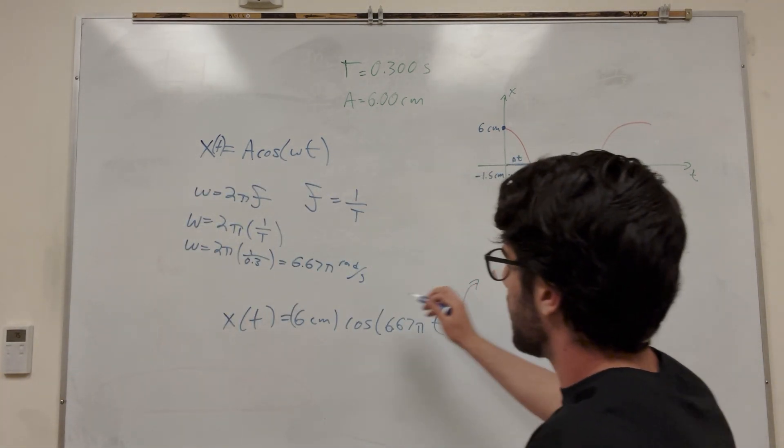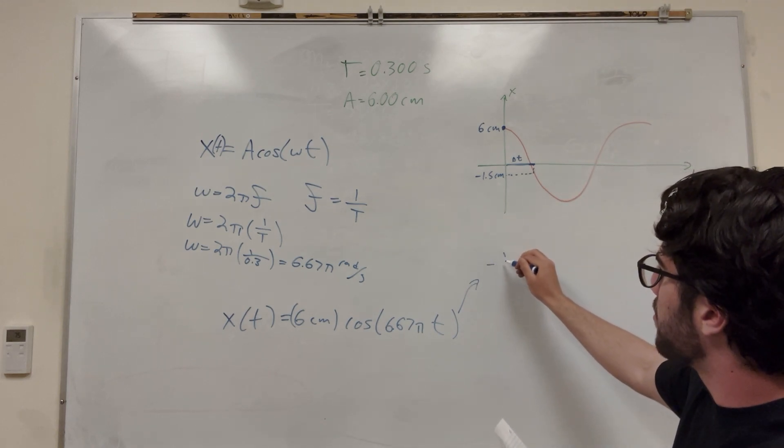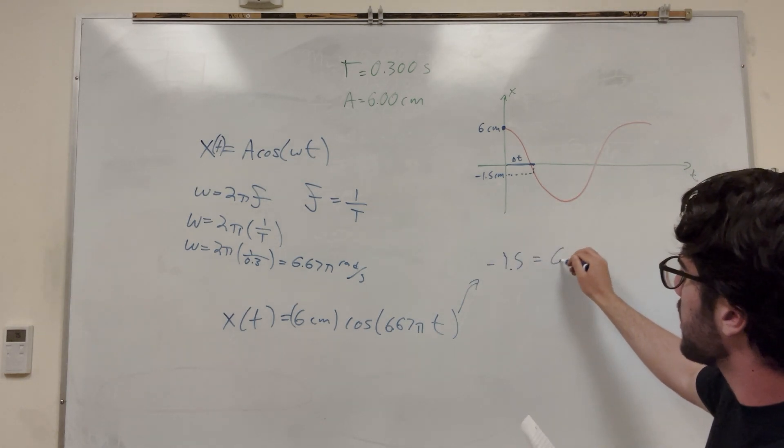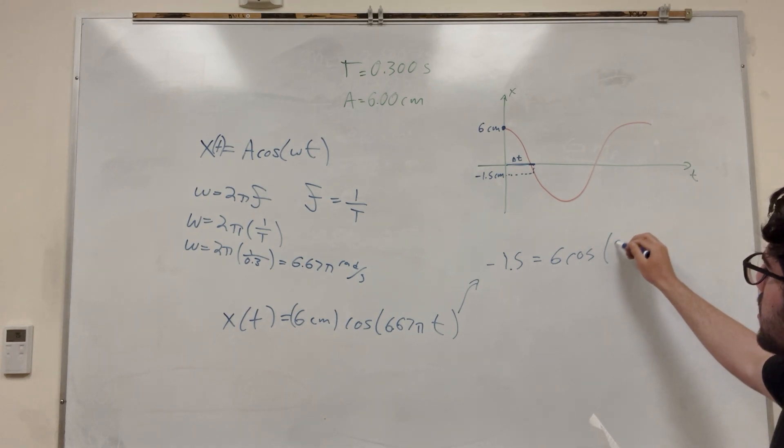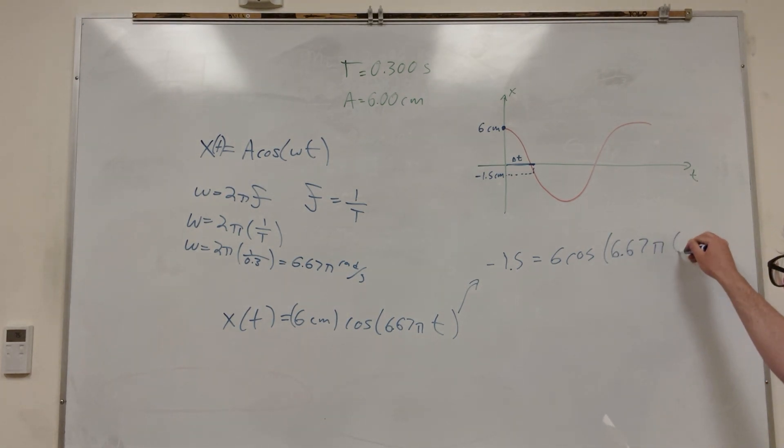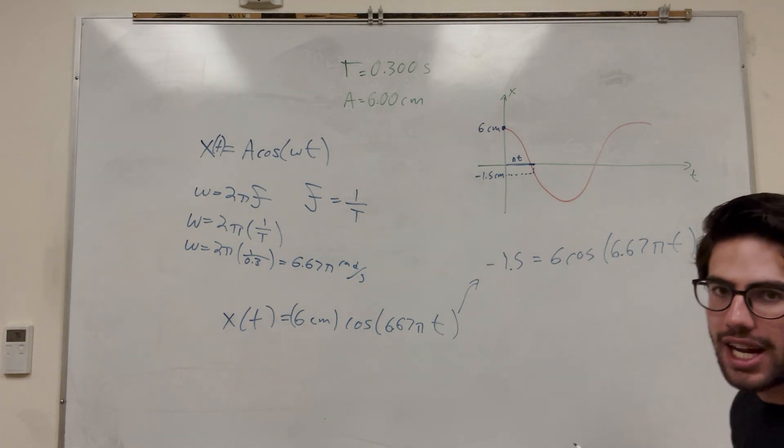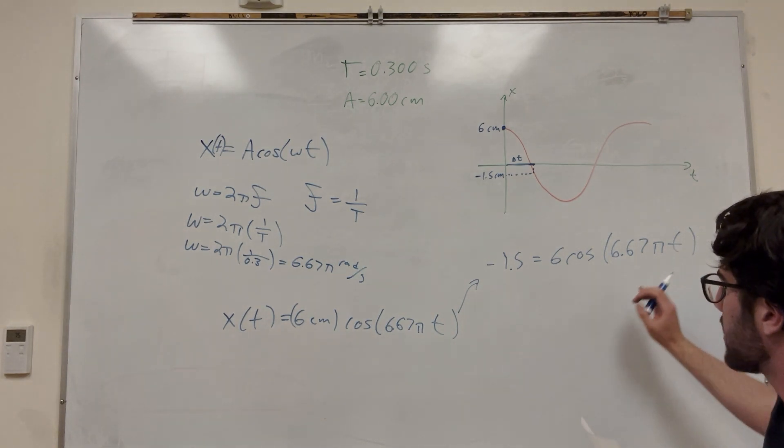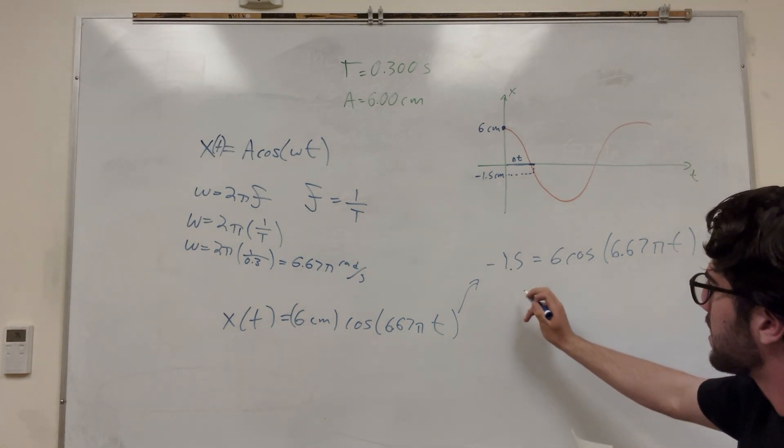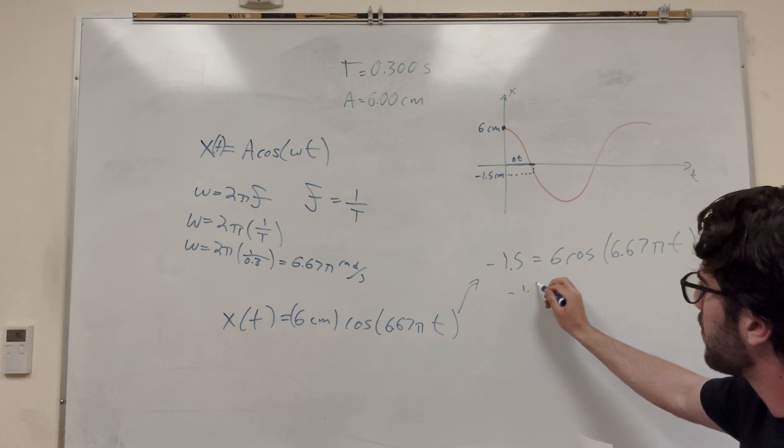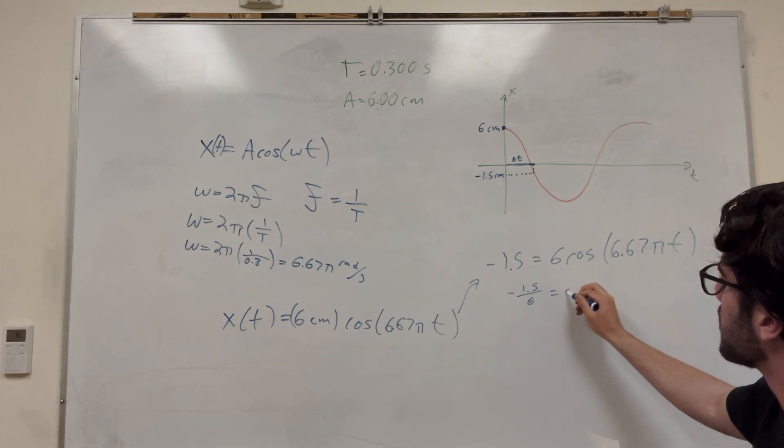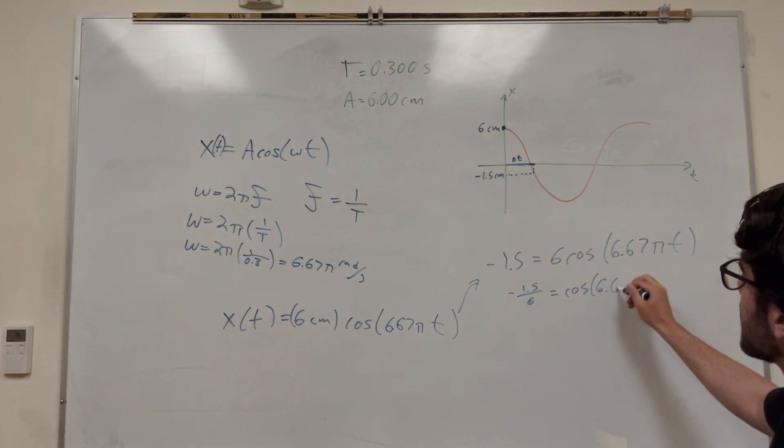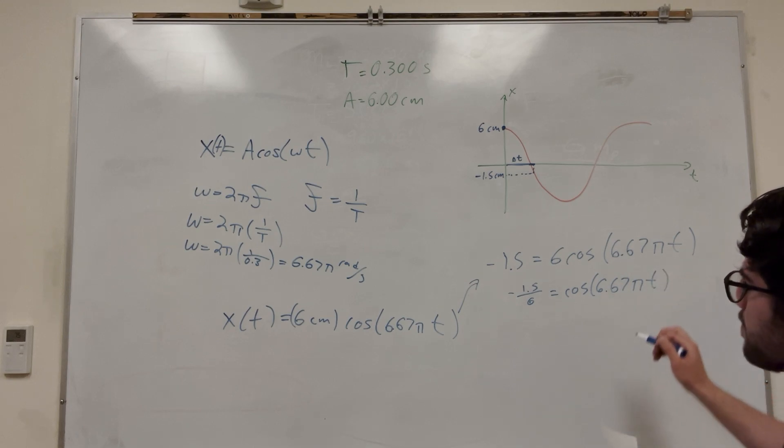So we can basically go over here. I'm going to just start solving it. So you're going to have the equation negative 1.5 is equal to 6 cosine 6.67 pi t. So what we have to do is we have to just kind of unravel this equation to get t by itself. So we're going to divide it by 6 on both sides. It's going to be negative 1.5 divided by 6 is equal to cosine 6.67 pi t.